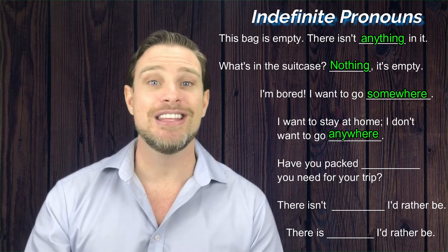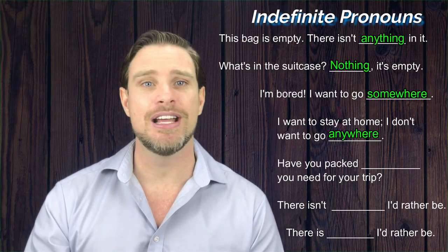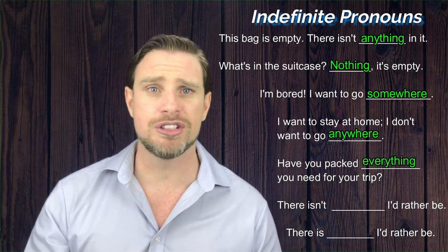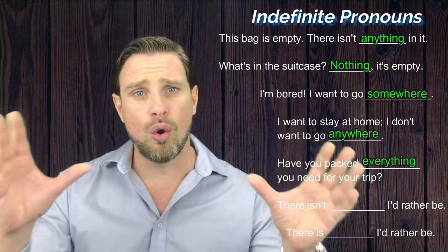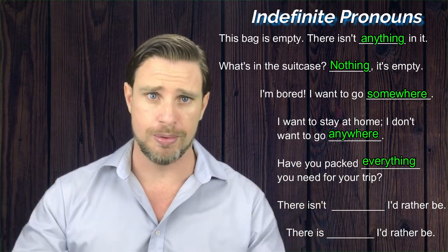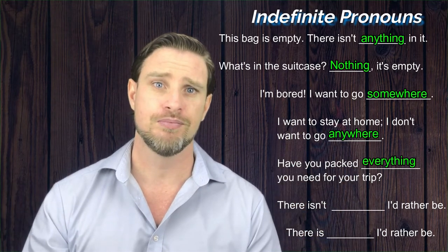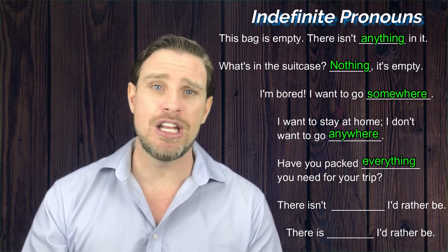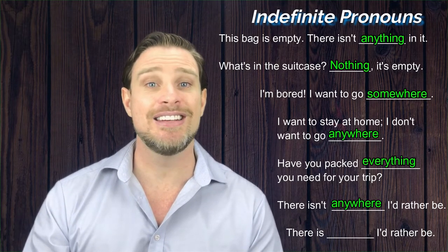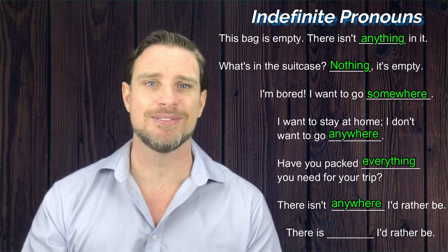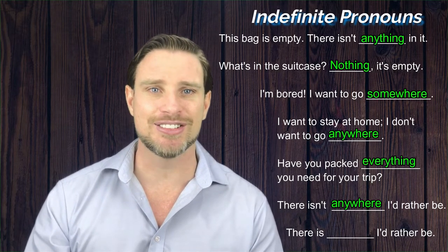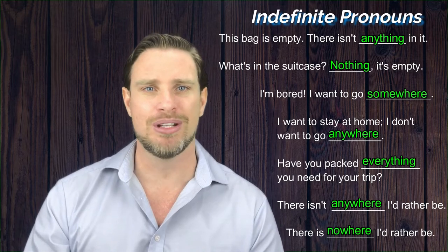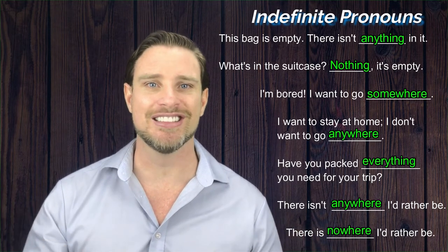Number five: the answer is 'everything', because this can be used in questions and is referring to all the things that you need for your trip. Next one: the answer is 'anywhere', because this is a negative sentence. And lastly, the final answer is 'nowhere', because this is a positive sentence.